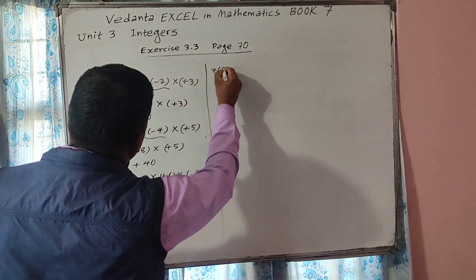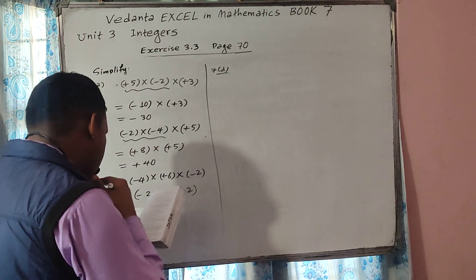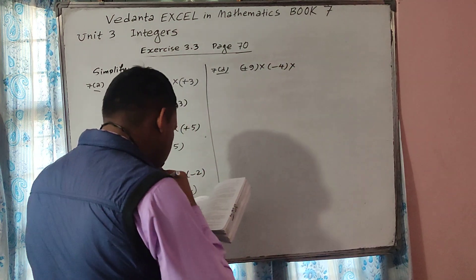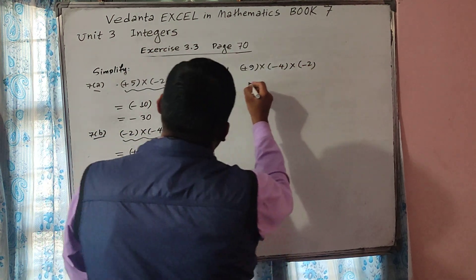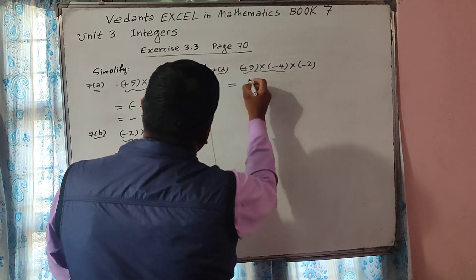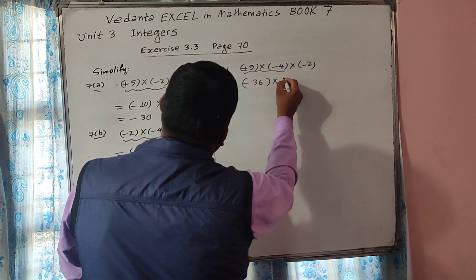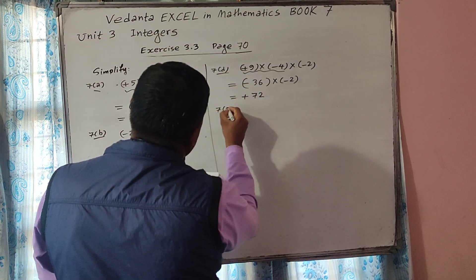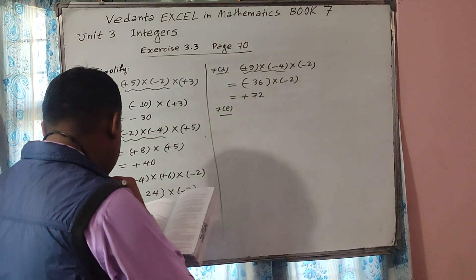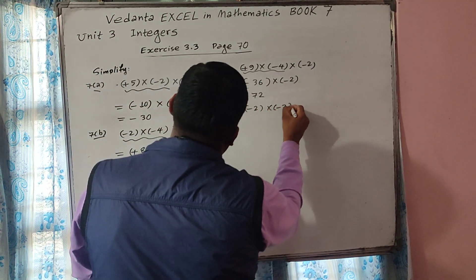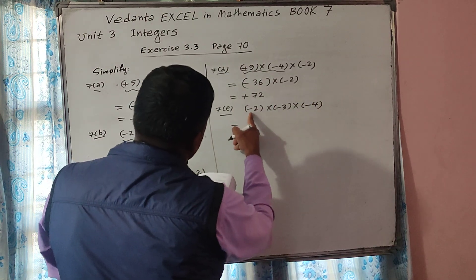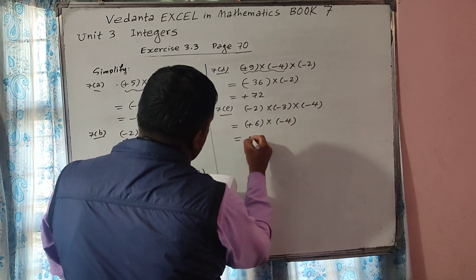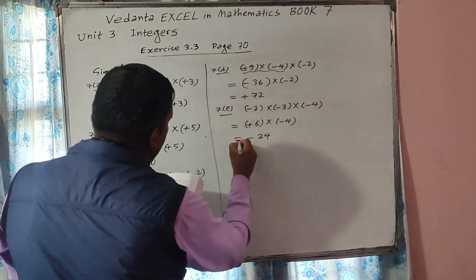Now 7D: plus 9 into minus 4 into minus 2. Look at the first and second numbers — plus into minus gives minus, so 9 times 4 is 36, giving minus 36. Then minus 36 into minus 2 — minus into minus gives plus 72. Now 7E: minus 2 into minus 3 into minus 4. Minus into minus gives plus 6. Then plus 6 into minus 4 — plus into minus gives minus 24. Minus 24 is the answer.